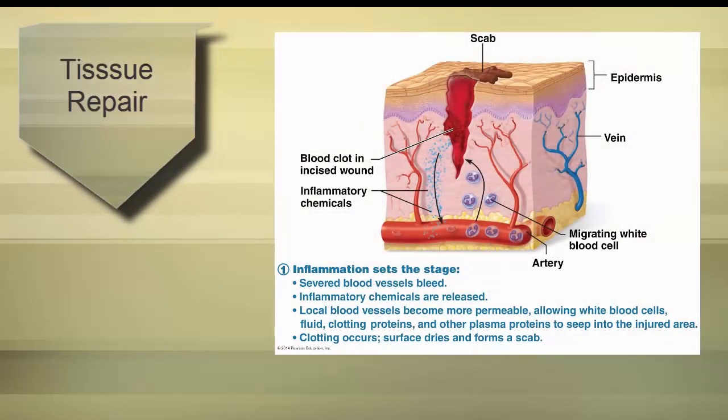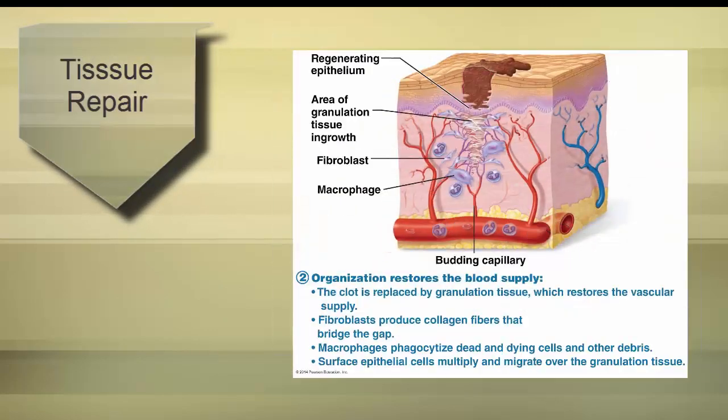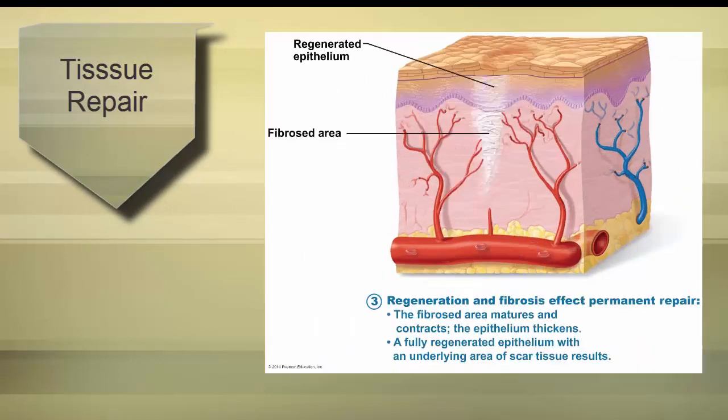We will talk more about burns and other homeostatic imbalances in lecture, and also go into the basics of tissue repair. Your textbook does a very nice job of giving a timeline of events for a non-extensive skin wound — please read this section of Chapter 4 and we will elaborate in class. We will also revisit wound repair when we learn the immune system in Anatomy & Physiology II. That's it for this video.